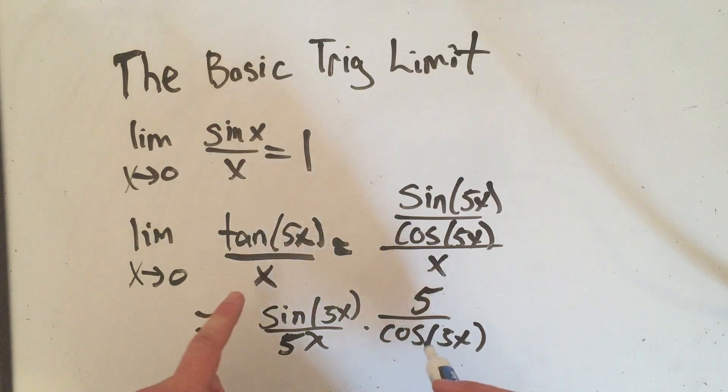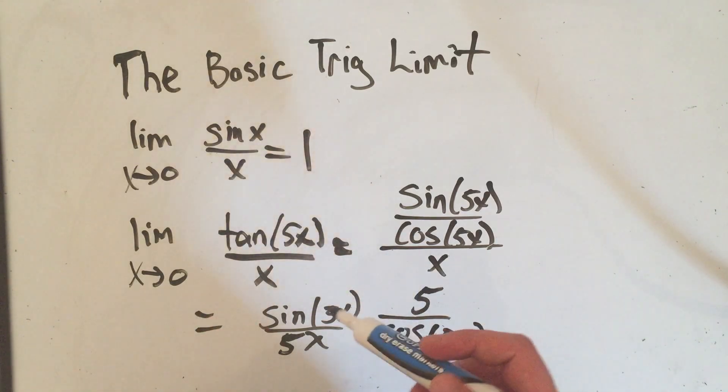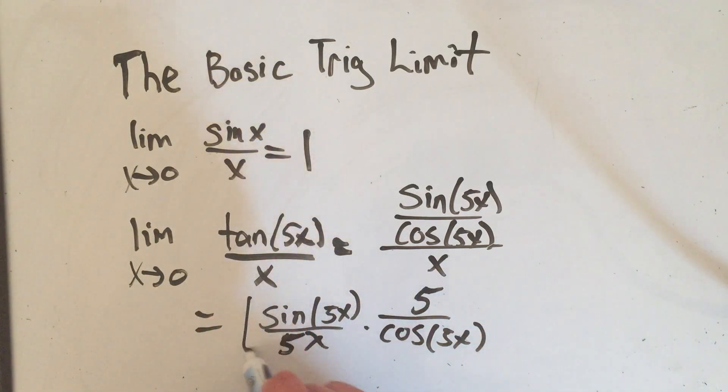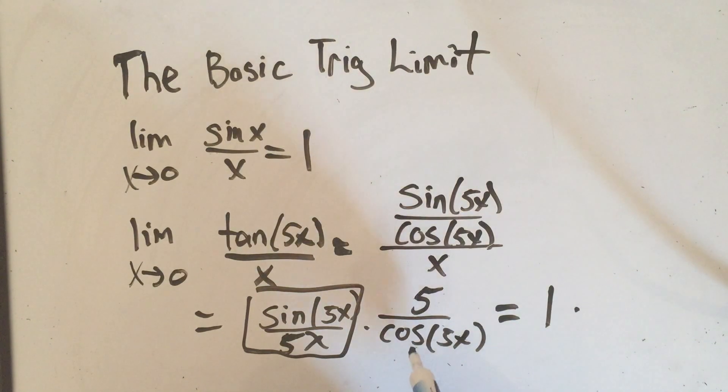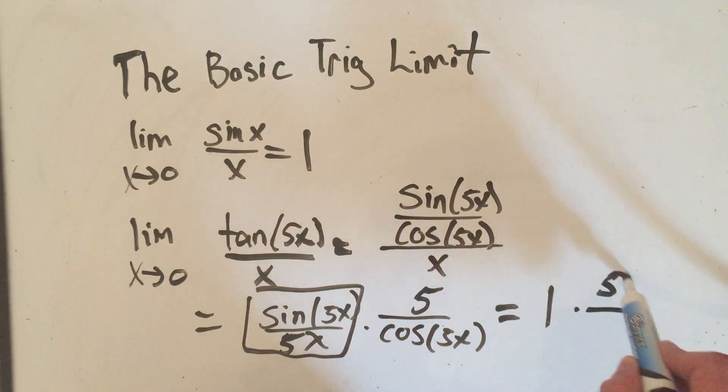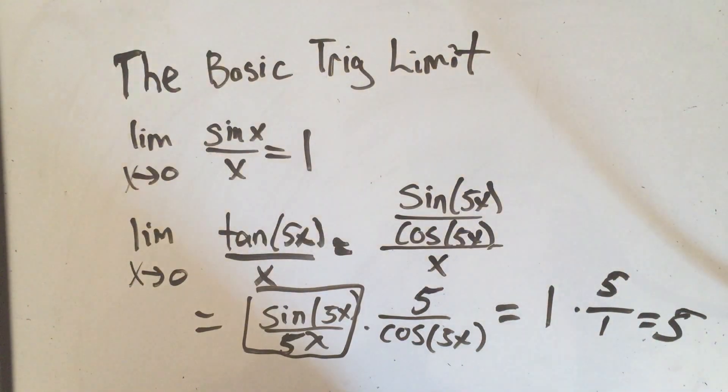But now this has the benefit of when I take the limit, this part goes to 1 by the identity. Cosine of 0 is 1, so this becomes 5 over 1. 1 times 5 over 1 is 5.